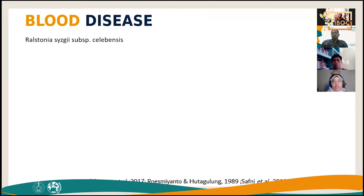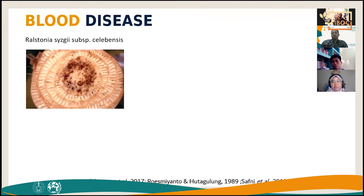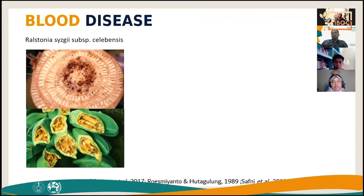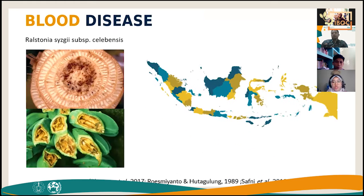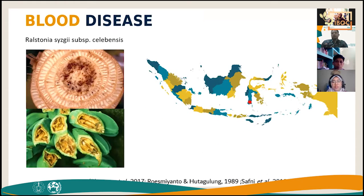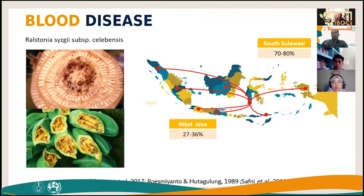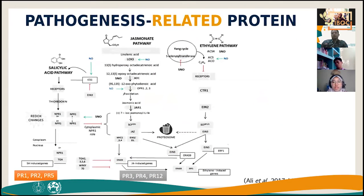Banana blood disease is caused by Ralstonia syzygii subsp. celebesensis. Symptoms include brown spots and red mucous in the pseudostem, and yellow, dry leaves. The bacterium was first isolated in 1921 in South Sulawesi, Indonesia, and has since spread to almost all islands in Indonesia, becoming a major threat to banana production. The alternative solution is to develop banana plants tolerant to blood disease by utilizing genes responsible for defense mechanisms.